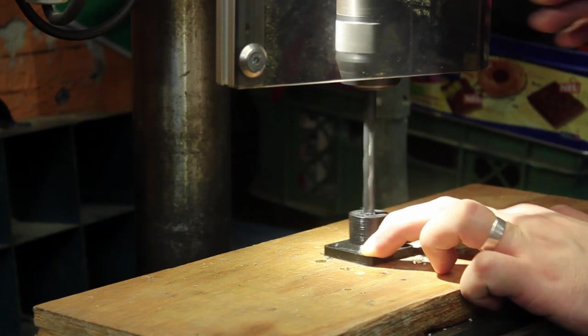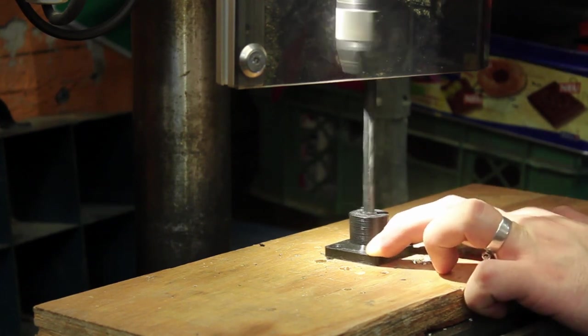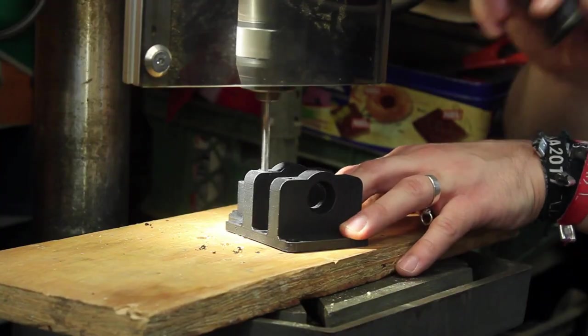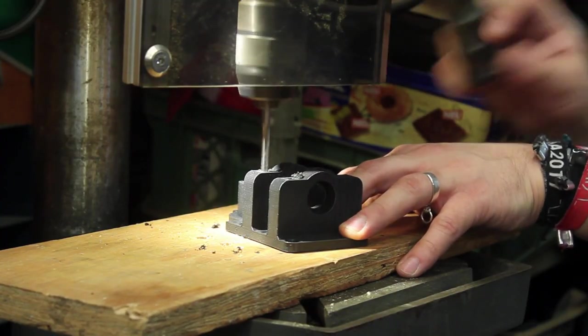As usually a 3D printed hole is a bit smaller than sketched, so I am just drilling it open with an 8mm drill bit. Let's drill open the bolt holes for the 5mm bolts as well.